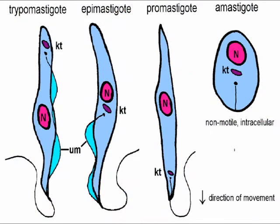There are four stages. The first is the amastigote: it is a non-motile intracellular parasite form found inside cells.